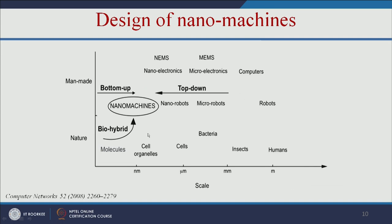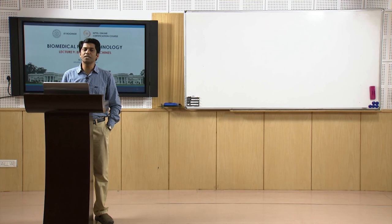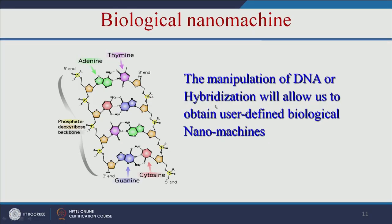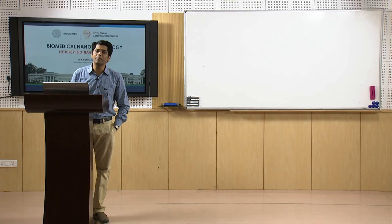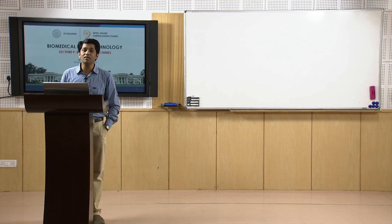There are two approaches: bottom-up and top-down. Man-made nanomachines use the top-down approach — we started with robots and are trying to make nanorobots. But nature uses the bottom-up approach: it assembles DNA and protein to make nano-scale machines. DNA and protein play a major role because manipulation of DNA or hybridization allows us to obtain user-defined biological nanomachines.